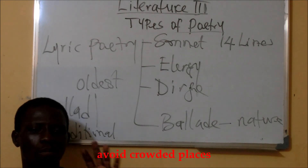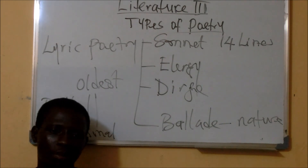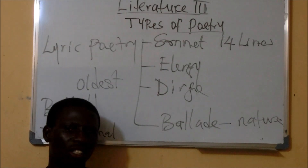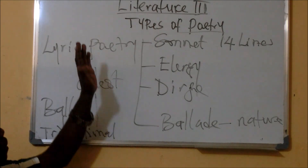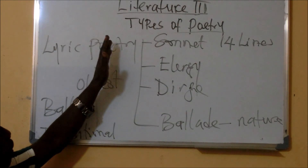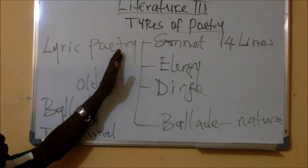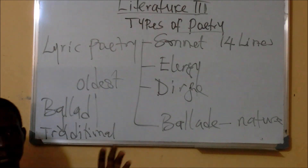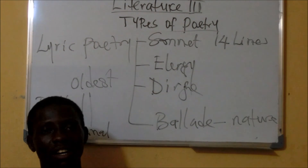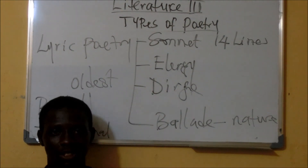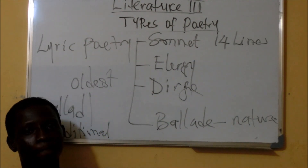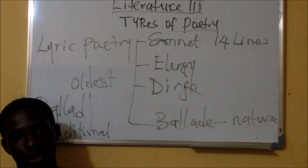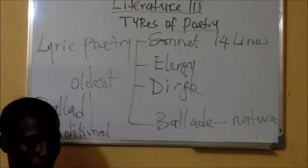In summation, poetry is basically divided into two types: narrative poetry and lyric poetry. In our next class, we will be looking at the history of poetry. Thank you.